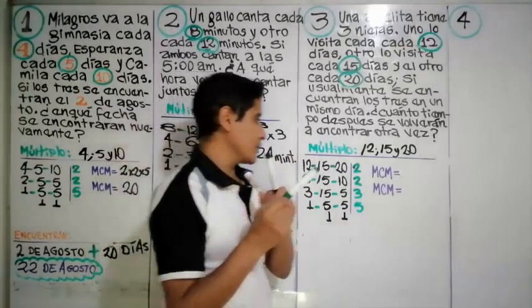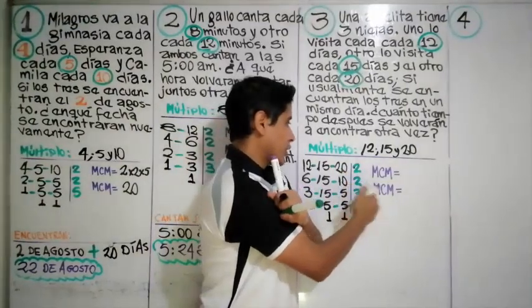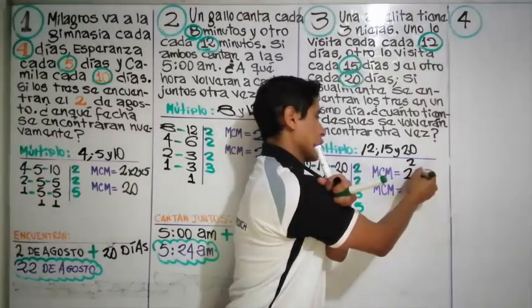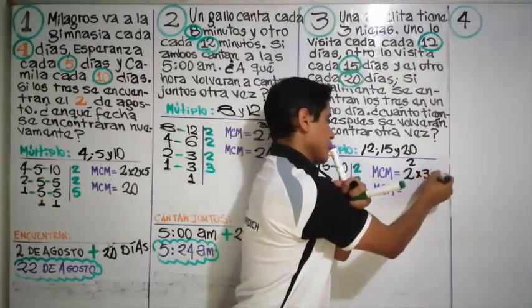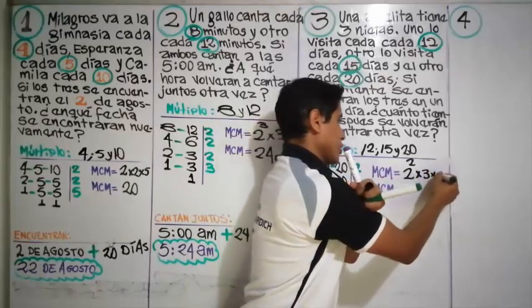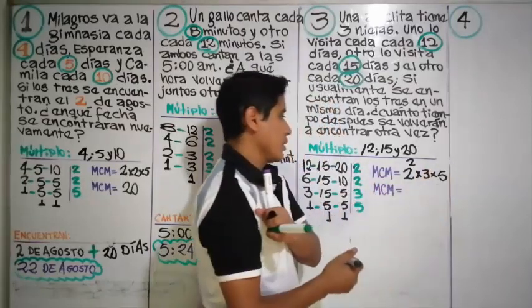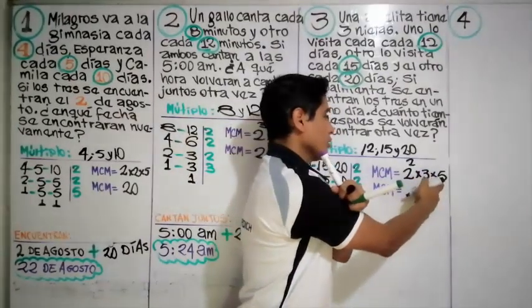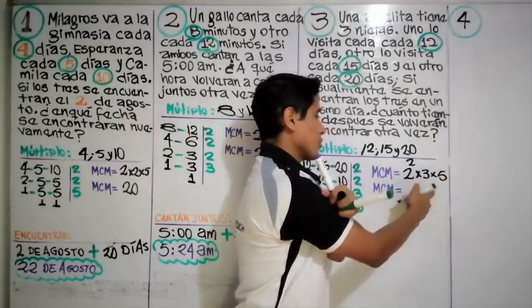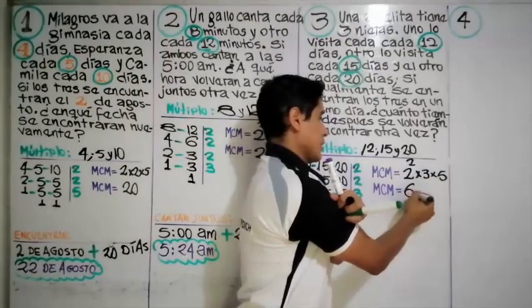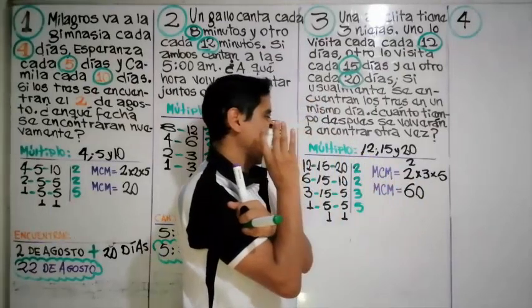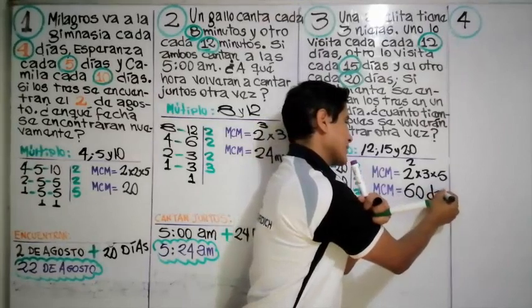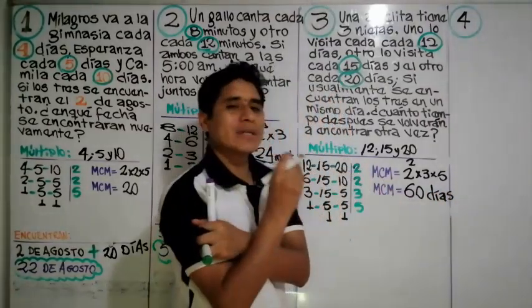El mínimo común múltiplo es dos al cuadrado por tres a la potencia uno por cinco a la potencia uno. Tres por cinco es quince, quince por cuatro es sesenta. Cada sesenta días lo van a visitar juntos.